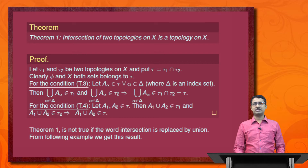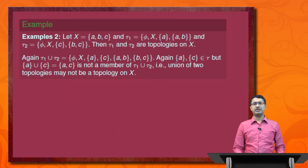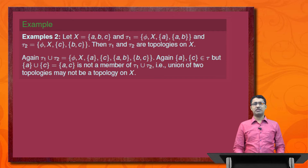Theorem 1 does not hold if the word intersection is replaced by union. From the following example we get the required result. Let X = {a, b, c}, tau_1 = {phi, X, {a}, {a,b}}, and tau_2 = {phi, X, {c}, {b,c}}. Then tau_1 and tau_2 are both topologies on X. Now tau_1 union tau_2 = {phi, X, {a}, {c}, {a,b}, {b,c}}. Since {a} and {c} are open sets, their union {a,c} should also be open, but {a,c} is not a member of tau_1 union tau_2. Thus the union of two topologies may not be a topology on X.